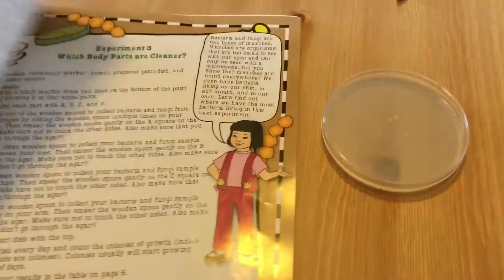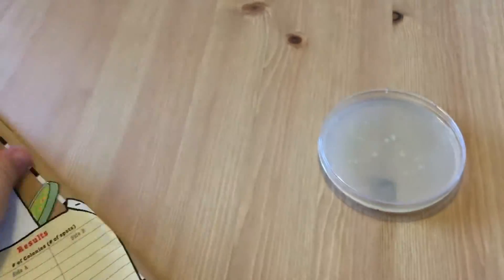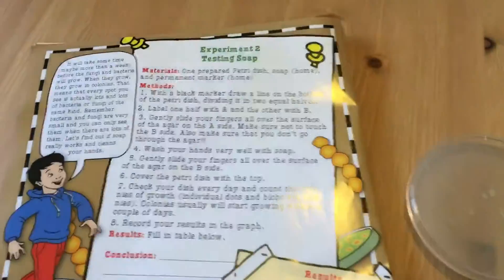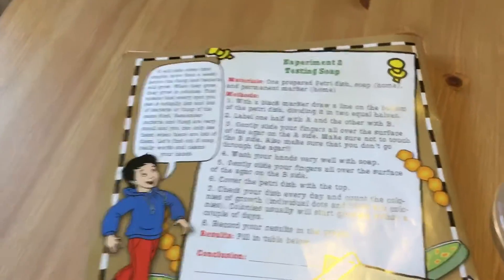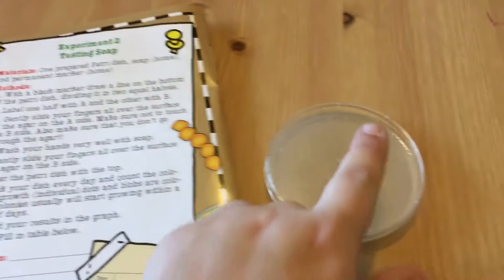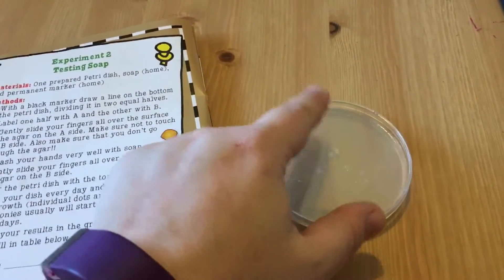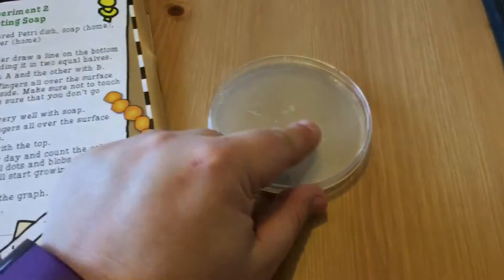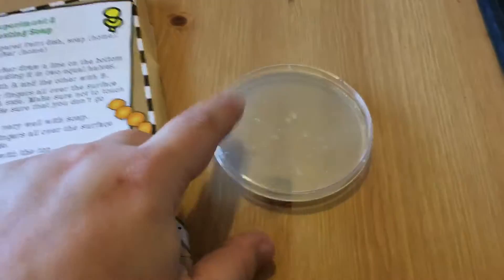And today we are going to be doing experiment two, which is testing soap. So what we are going to do is take the petri dish and draw a line on the bottom of the dish and label one side A and one side B.